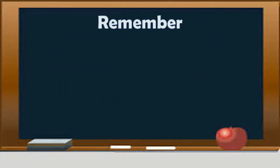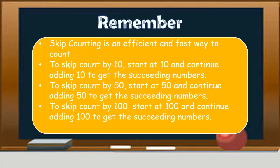You need to remember the following. Skip counting is an efficient and fast way to count. To skip count by 10, start at 10 and continue adding 10 to get the succeeding numbers. To skip count by 50, start at 50 and continue adding 50 to get the succeeding numbers. The same goes for skip counting by 100. You start at 100 and continue adding 100 to get the succeeding numbers.